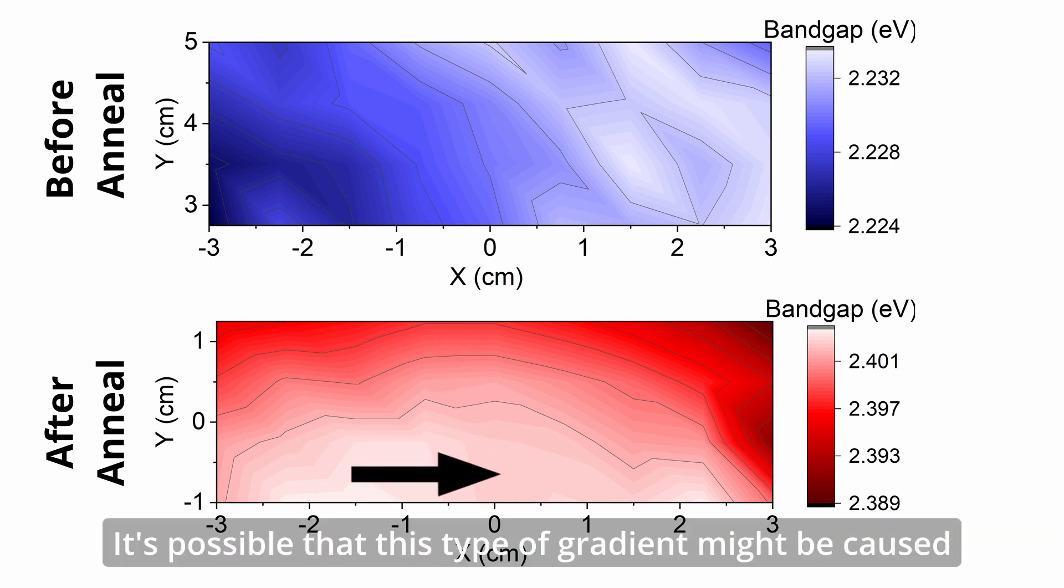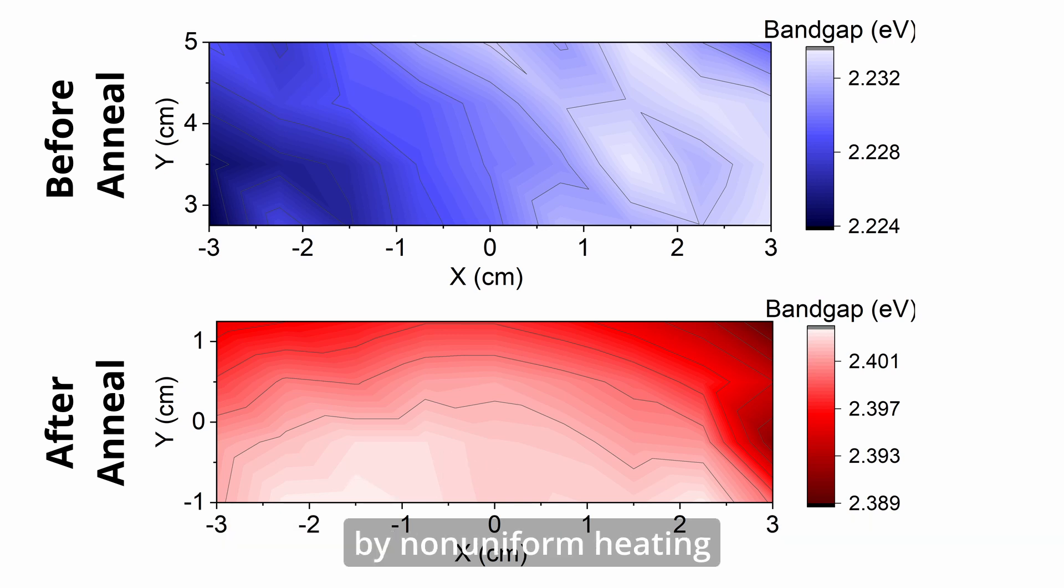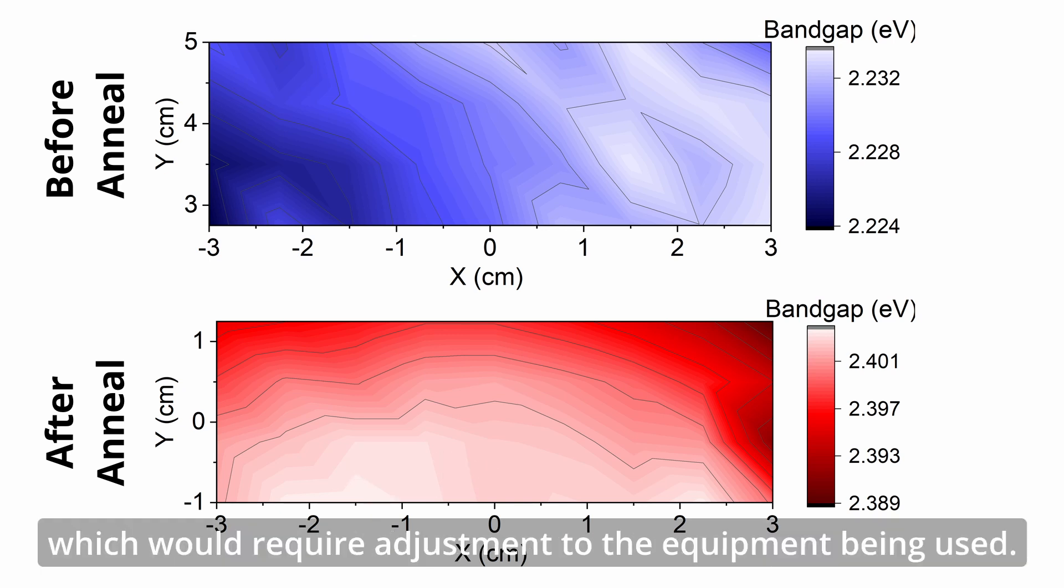It's possible that this type of gradient might be caused by non-uniform heating, which would require adjustment to the equipment being used.